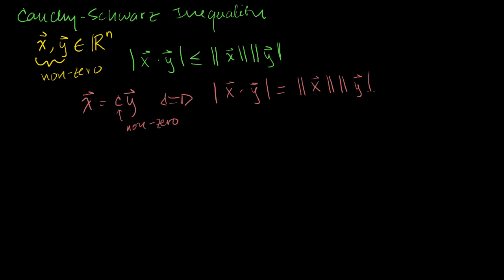This is all just a review of what I did in the last video. Now what else can we do that's useful with it? Let's see what happens if I were to take the length of x plus y, add the two vectors, and then take the length of that vector squared. We know from a couple of videos ago that the length squared can also be rewritten as the dot product of a vector with itself.